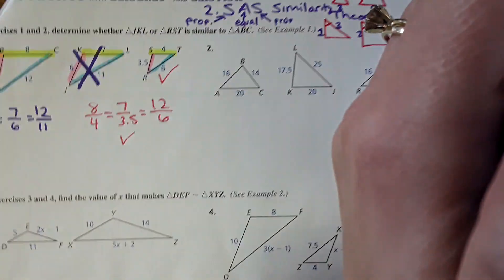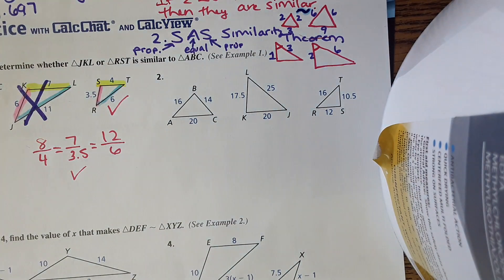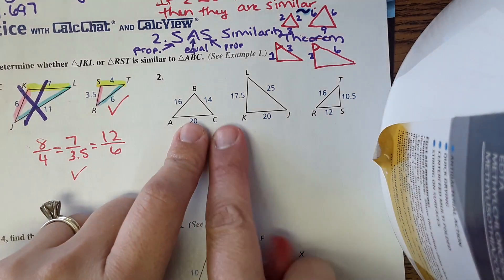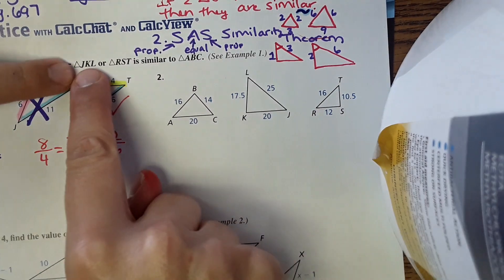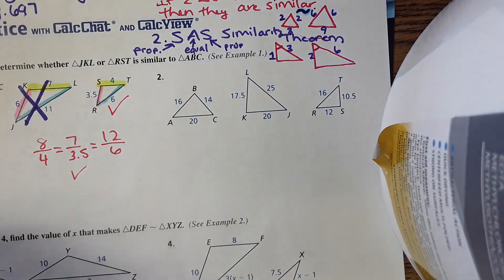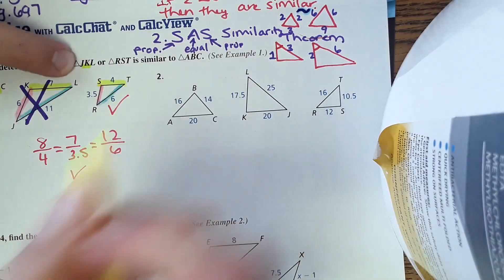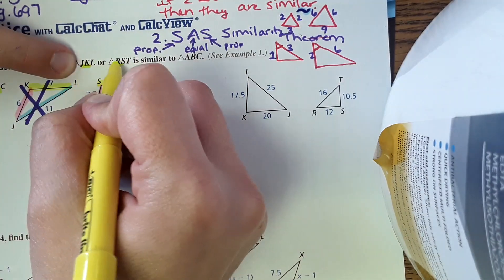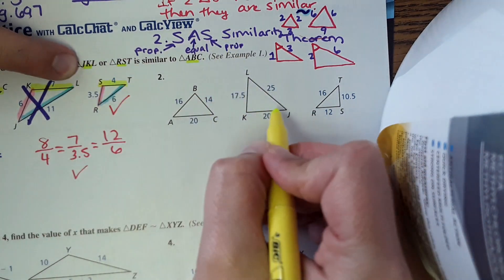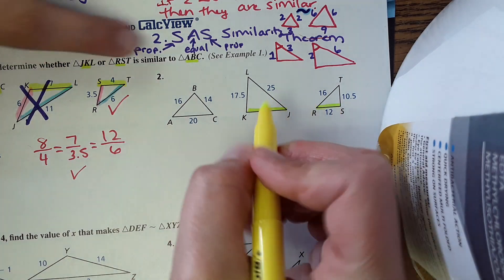Number 2. Same idea, but these triangles are in a different orientation. It's actually hard to see which sides correspond with what. If you're not sure what corresponds with what, just go back to the statements. So JK should correspond with RS and AB. JK corresponds with RS and AB.